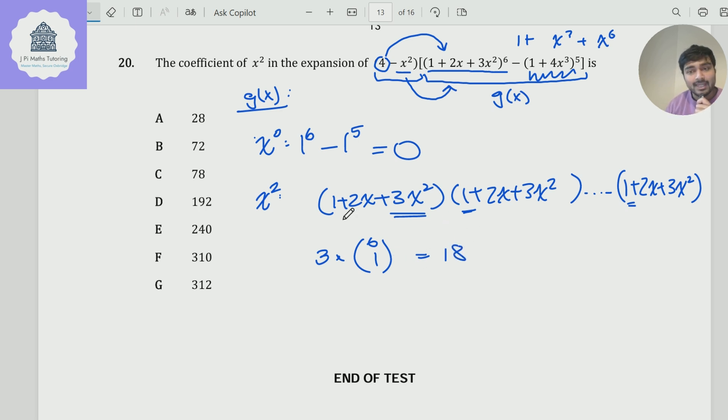Okay, there's one way we could get x². How else could we get x²? Well, I could take a 2x from one bracket, a 2x from another bracket, and then just take ones from all the other brackets. Now, if I do that, I'm going to get 2x times 2x, that's 4x². And now how many ways are there to do that?